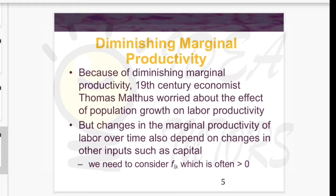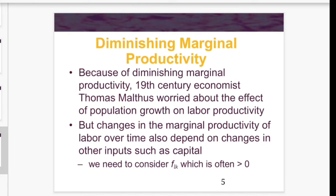Because of diminishing marginal productivity, Thomas Malthus was worried that if population kept growing, labor productivity would reduce. However, marginal productivity of labor over time also depends on changes in capital. If more labor is employed while capital is also progressing or technology is improving, marginal productivity may not diminish as fast, or may even rise.